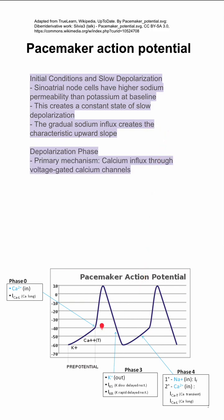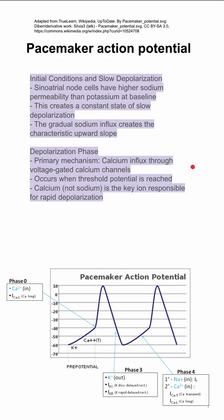Then you have a depolarization phase, shown here. This is primarily through calcium influx through voltage-gated calcium channels, and it occurs when the threshold potential is reached. Calcium, not sodium, is the key ion responsible for rapid depolarization, and this differentiates these pacemaker cells from other cardiac myocytes and neurons.